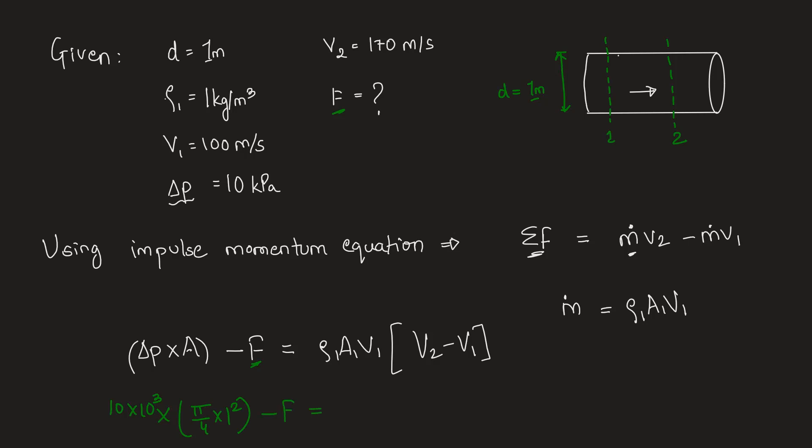Rho 1 is given 1 kg per meter cube so we will substitute it as it is 1 into again A1 is given as pi by 4 into 1 square into V1 is 100 meter per second and in the bracket we have V2 is 170 minus again V1 is 100.